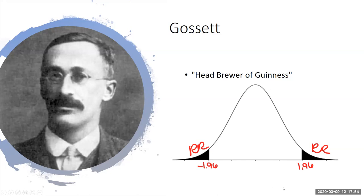Let's say the batches of hops Gossett was looking at were normal — all of fine acidity. You can see how five percent of the time he's going to conclude something is wrong: two and a half percent of the time he'll conclude it's too acidic, and two and a half percent he'll conclude it's not acidic enough. Even though the whole batch was normal, about five percent of the time it would come out looking weird. Gossett was okay with that.